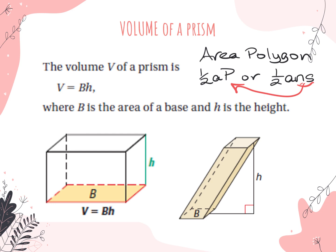In the homework tonight, you're going to see a picture of a triangular prism. Sometimes when they give you pictures of prisms, they're not always sitting on their base. In one of the homework questions, it's a triangular prism but it's going to be sitting on one of the lateral faces — on a rectangle. So you're going to need to use the formula for area of a triangle as your base shape, and then multiply it by the height of that prism.